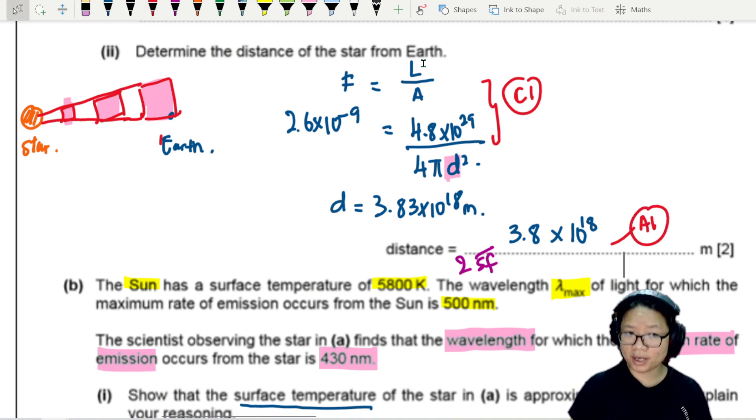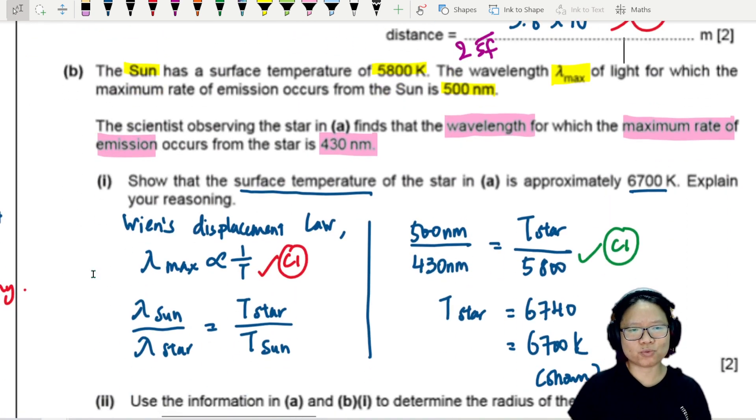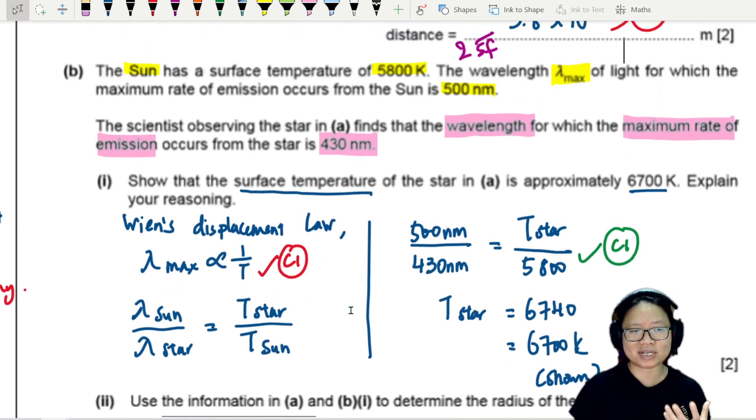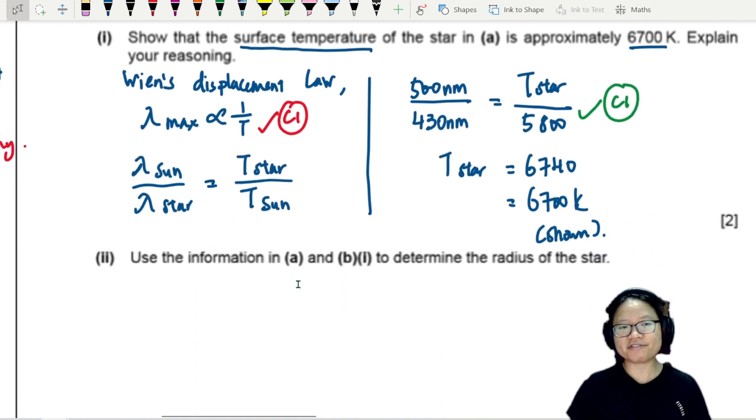Not just L over A, but L over 4πd², the whole thing. Then substitution leading to the answer. That's it for this one. For Wien's displacement law, at the end of the day, what we're looking for is the temperature of this new star that the scientist is observing.